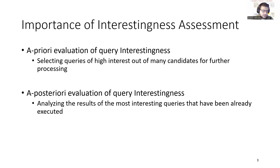For example, in AlienCubes — the system in which we have implemented the algorithms we are going to present — we also have a very first version of a describe operator, a simple operator that answers cube queries and provides information for their results that are not already known, such as clusters of the result cells and top-bottom key values. For such a system, being able to select the most interesting queries out of many candidates is very important for a priori evaluation. For a posteriori evaluation, having a big pool of already executed queries allows us to analyze the results of the most interesting queries of the pool.